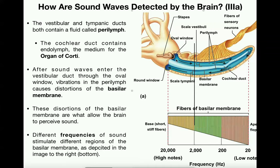What's the point of vibrations moving through the vestibular duct and then the tympanic duct? Remember, certain sounds have a higher pitch — a higher note — which means a higher frequency. Someone who sings soprano has a higher pitch, meaning higher frequencies. Lower voices correspond to lower frequencies. It turns out that different frequencies of sound vibrate different parts of the basilar membrane, which exists at the base of the cochlear duct. Different frequencies of sound vibrate different parts of the basilar membrane.